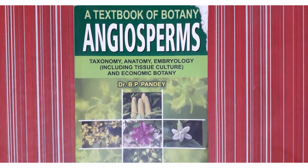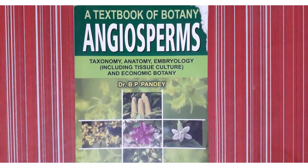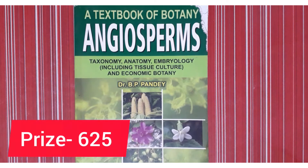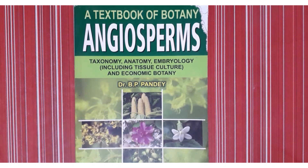The first book is Angiosperms, which is for BSc second year, first paper. This book covers taxonomy, anatomy, embryology including tissue culture, and economic botany. The writer is Dr. BP Pandey and the publication is S. Chand Publication. It is a very affordable book priced at 625 rupees and the content is also very good.